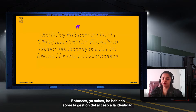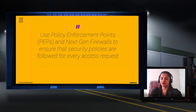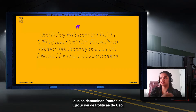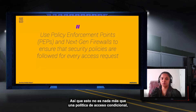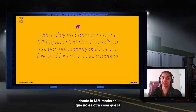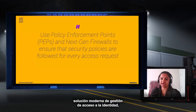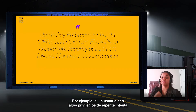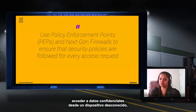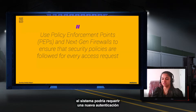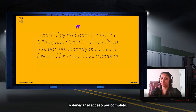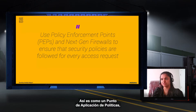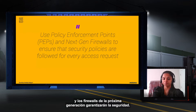Beyond MFA and SSO, we need policy enforcement points — specifically conditional access policies. Modern identity access management solutions use contextual signals such as location, device health, and user behavior to dynamically adjust access permissions. For example, if a high-privileged user suddenly tries to access sensitive data from an unfamiliar device, the system might require re-authentication or deny access entirely. This is how policy enforcement points and next-gen firewalls ensure security.